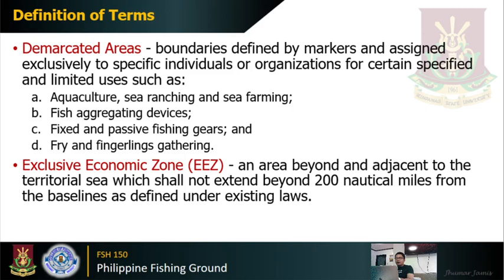Another term is the exclusive economic zone, otherwise known as the EEZ. It is an area beyond and adjacent to the territorial sea which shall not extend beyond 200 nautical miles from the baseline as defined under existing laws. Later on, you will see how wide our EEZ is in the Philippines, and a map showing the boundaries of the territorial waters of the Philippines will be shown.